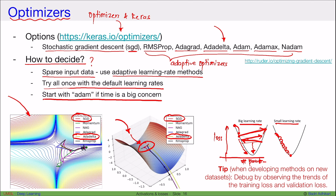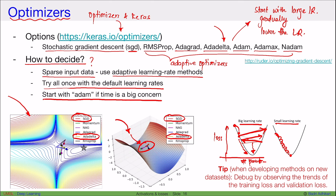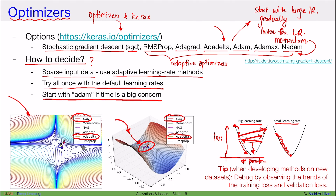Adaptive learning rate optimizers work by starting with a large learning rate and then gradually lowering it. This is controlled by the momentum parameter, which all of these optimizers accept as input. All of them have default values, so we typically don't need to change them.